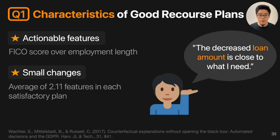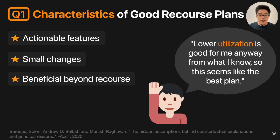By analyzing the usage logs and survey responses, we aimed to answer three related questions. First, we studied the characteristics of good recourse plans. Our findings validate many hypotheses from existing recourse researchers. For example, participants prefer actionable features — it's easier to change FICO scores than employment, so many more participants chose FICO scores. Participants also prefer smaller changes. We also found users prefer plans beneficial beyond the recourse goal itself — one participant wrote: 'lower utilization is good for me anyway for what I know, so this seems like the best plan.'